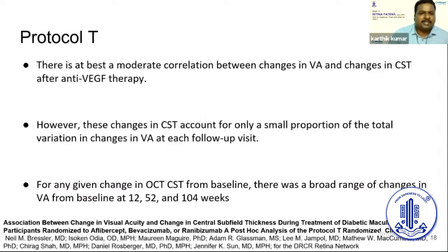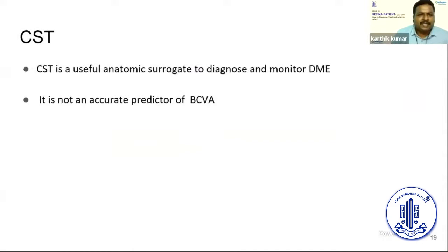Protocol T, a post-hoc analysis, also found at best a moderate correlation between visual acuity and change in macular thickness after anti-VEGF therapy, accounting for only a small proportion of cases. For any given change in CST from baseline, there is a broad range of changes in visual acuity at 12 to 104 weeks. CST is a useful anatomic surrogate to diagnose and monitor DME, but it is not an accurate predictor of BCVA.